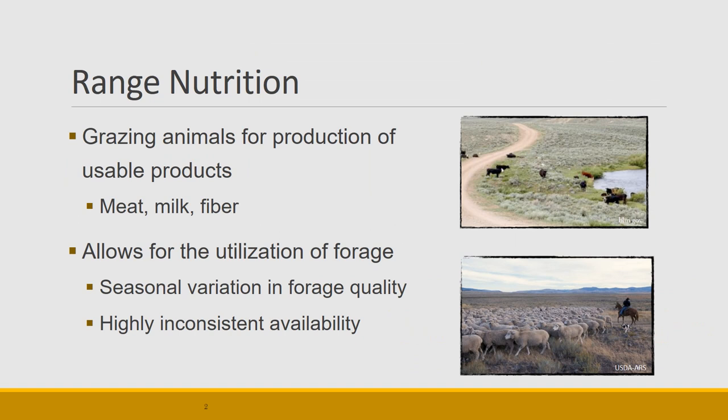Remember that animals were domesticated and livestock were produced about 10,000 years ago to produce meat, milk, and fiber. The challenge as a manager of livestock is that you're trying to use a forage resource that is really highly seasonally variable — really good forage at some times and not others, and also variable across landscapes. The challenge is to help animals negotiate the environment to produce the products that we want.